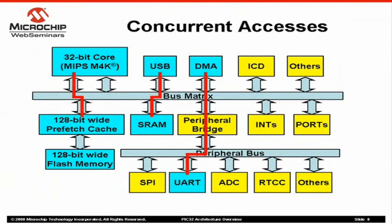Now that you know about bus masters and targets, let me explain an important feature of the bus matrix. As I mentioned earlier, the bus matrix is essentially a high-speed switch. Once a bus master initiates a transaction, the bus matrix establishes a point-to-point path from the bus master to the target module. While this first transaction is in progress, another bus master may initiate a second transaction to yet another target. Depending on the target, the bus matrix may establish a parallel path. This slide shows an example of three concurrent data paths.